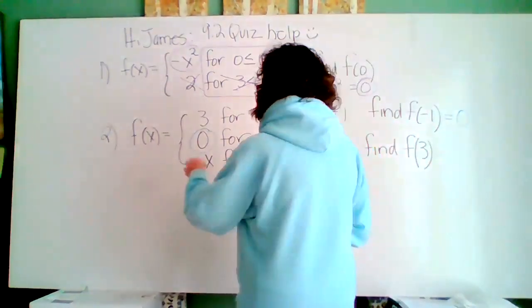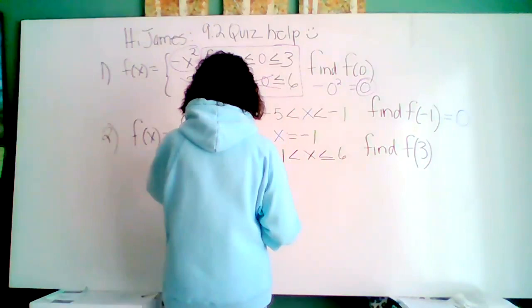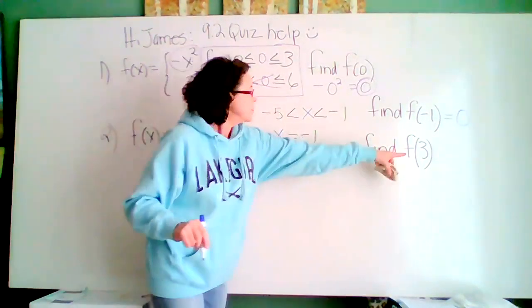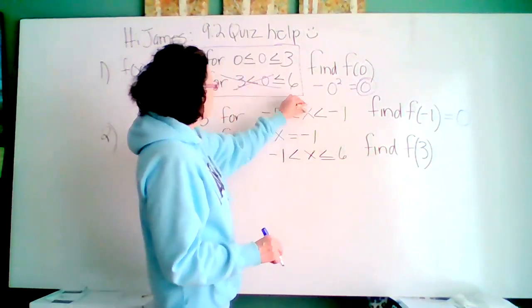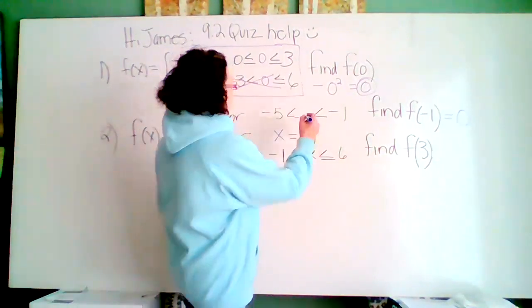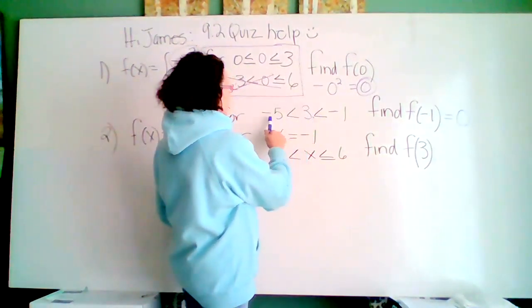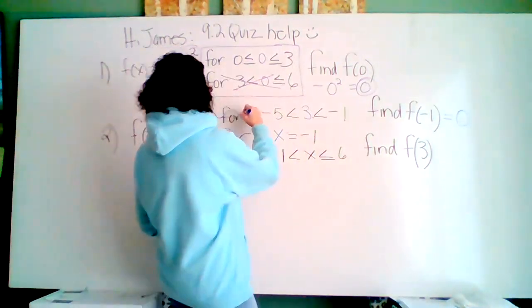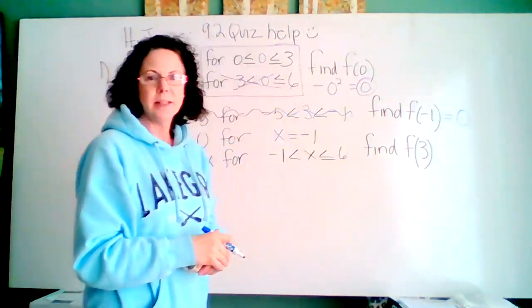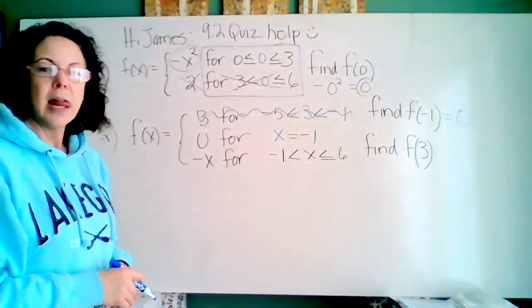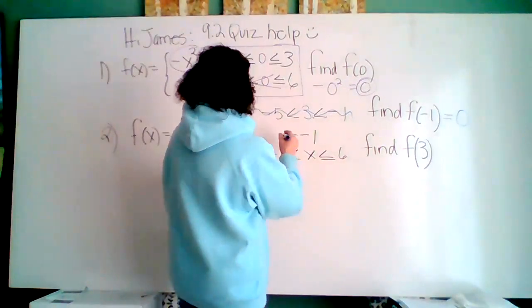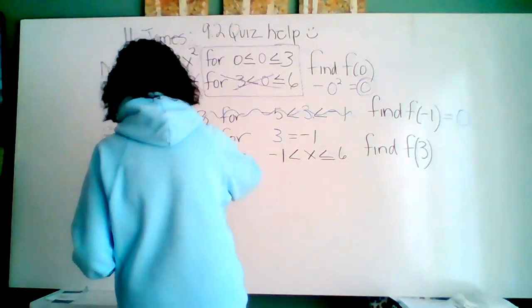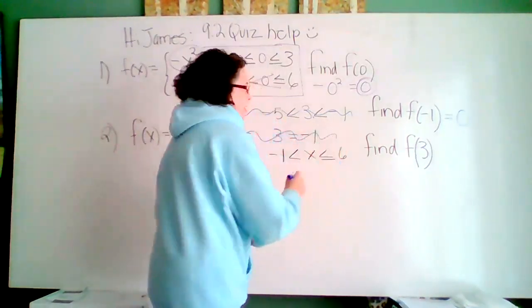Let's do f of three. Let's go back to the beginning. Let's put in a three for x. When I put in a three, is three in between negative five and negative one? No, I am not using the top function. Let's put a three here. Is three equal to negative one? No, it's not. This is not the function I'm using.